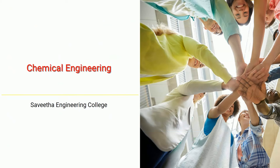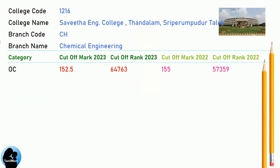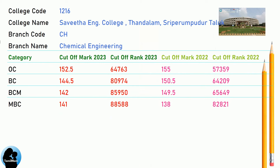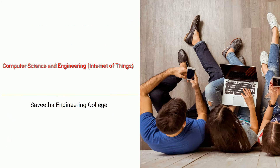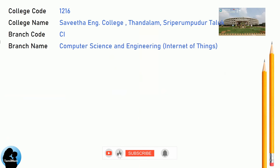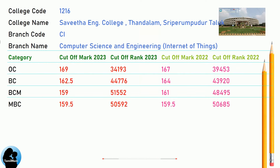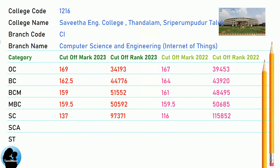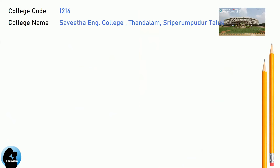Savitha Engineering College cut-offs for Chemical Engineering. Cut-offs for Computer Science and Engineering.